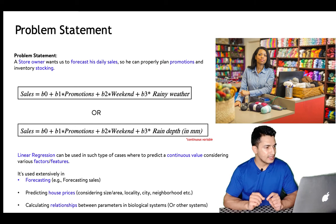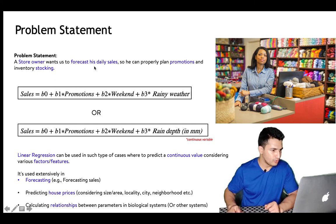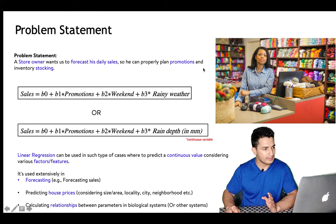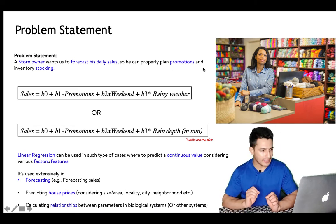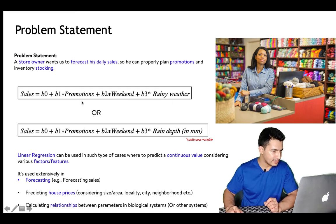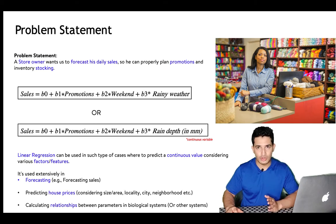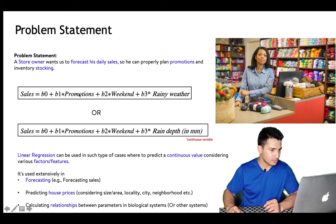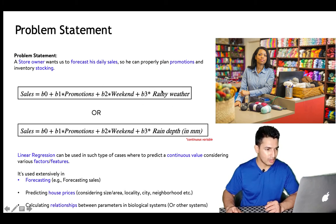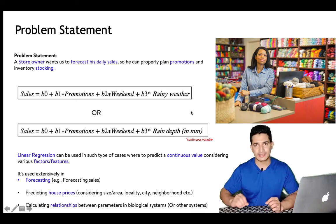Let's understand linear regression with a problem statement. Suppose a store owner wants to forecast daily sales so they can plan promotions or inventory stocking. They figured out that the major factors will be: whether there was a discount or promotion, whether it was a weekday or weekend, and whether it was rainy weather or not.